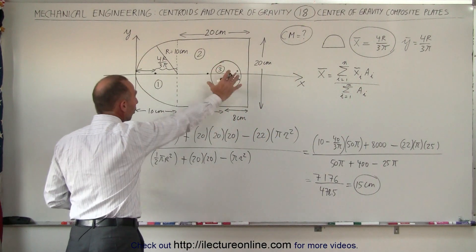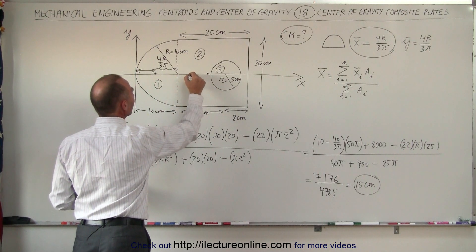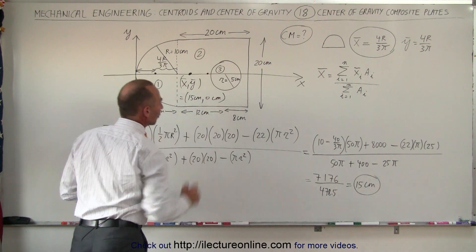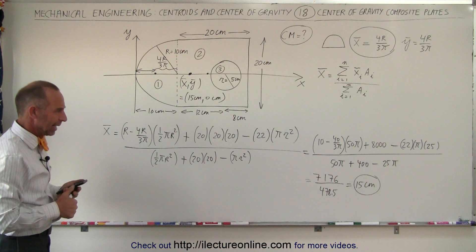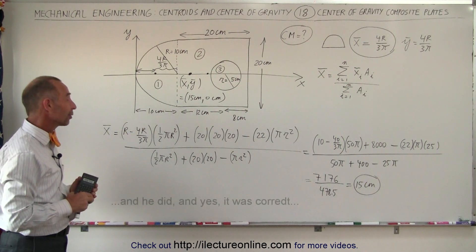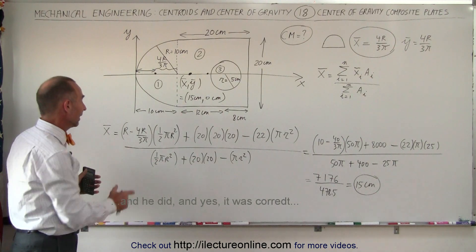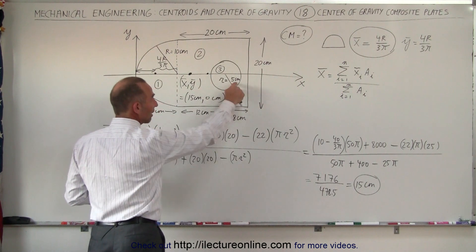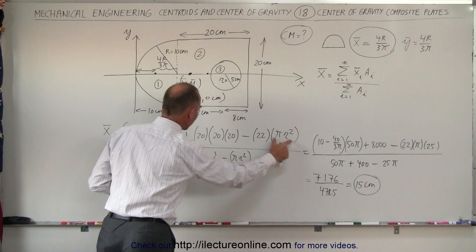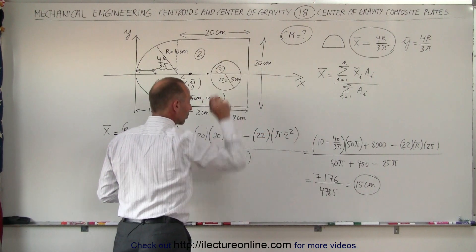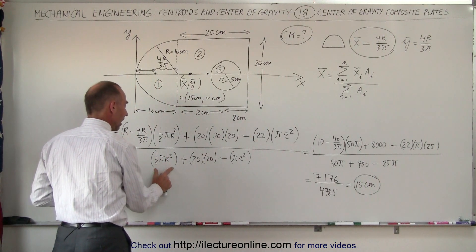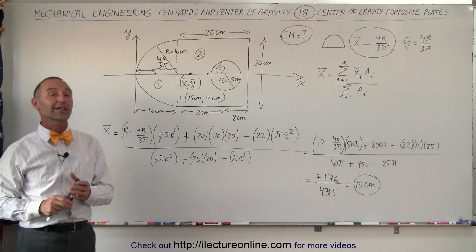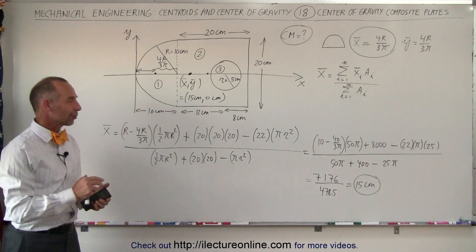The center of mass of this object with the hole in it is 15 centimeters from the origin, placing it right about there. So the x and y coordinates of the center of mass are 15 centimeters in the x direction and 0 centimeters in the y direction. To recap: take the x-coordinate of the center of mass of each individual piece — the semicircle, rectangle, and hole — multiply times each area, subtract when you have a hole, and divide by the sum of all areas (also subtracting the hole's area). The answer is 15 centimeters in the x direction.